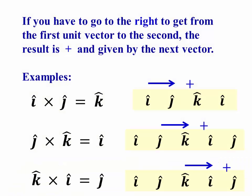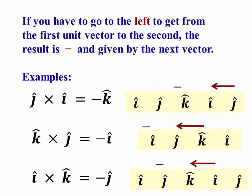Here's how this works. If you have to go to the right to get from the first unit vector to the second, the result is positive and given by the next unit vector. So when I is crossed with J, the next vector is K, and it's to the right, so I cross J gives me plus K. J cross K takes me to I, so that's plus. K cross I takes me to J, so that's plus. If I have to go to the left to get from the first to the second unit vector, like if I go J cross I, I have to go to the left to go from J to I. In that case, my answer is that next unit vector with a minus sign. So J cross I is negative K, K cross J is negative I, I cross K is negative J.